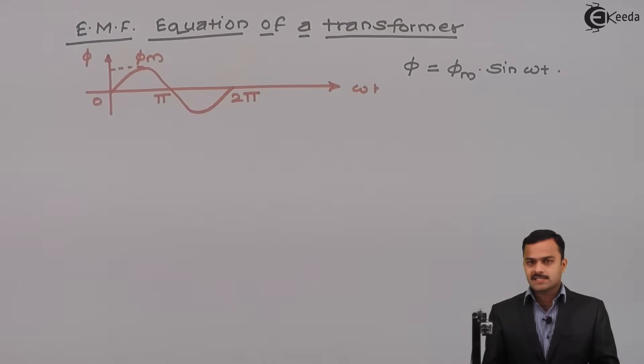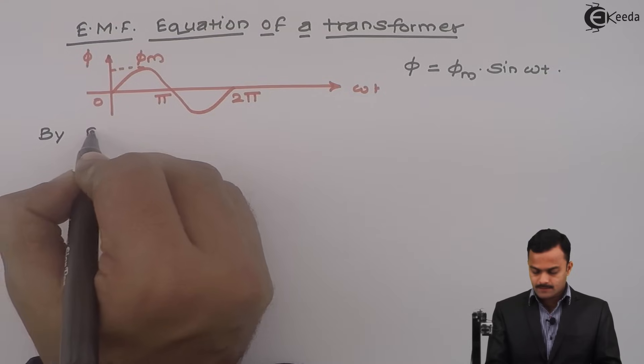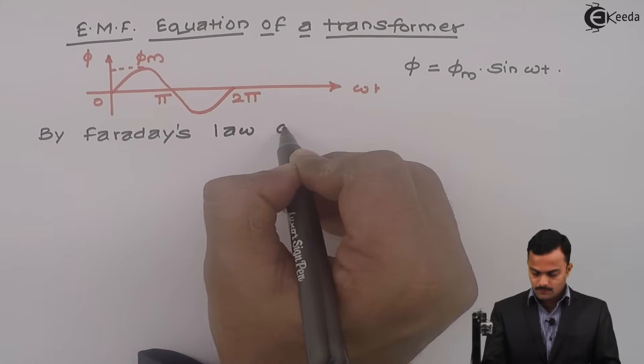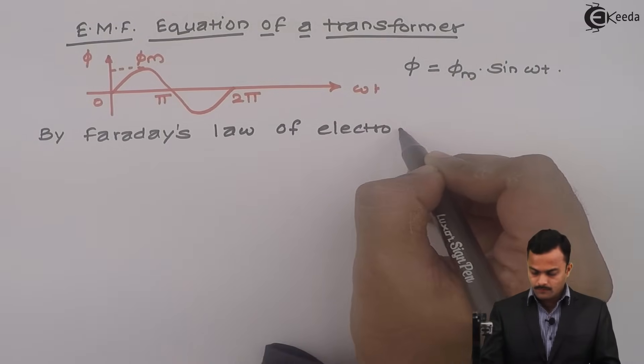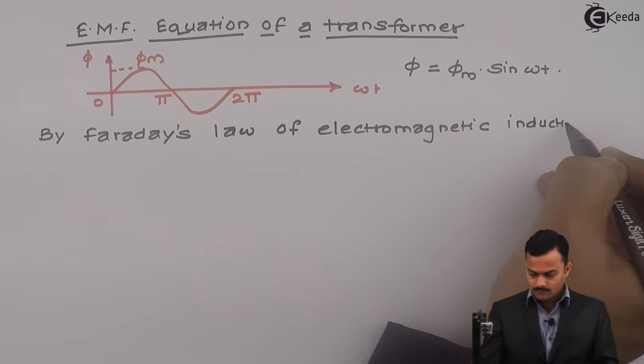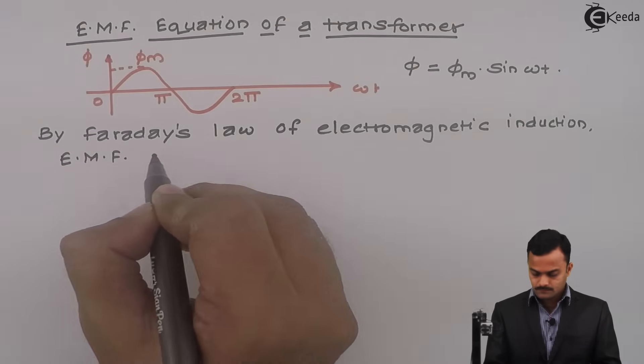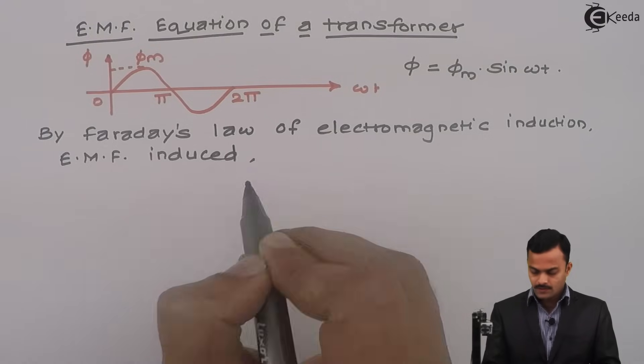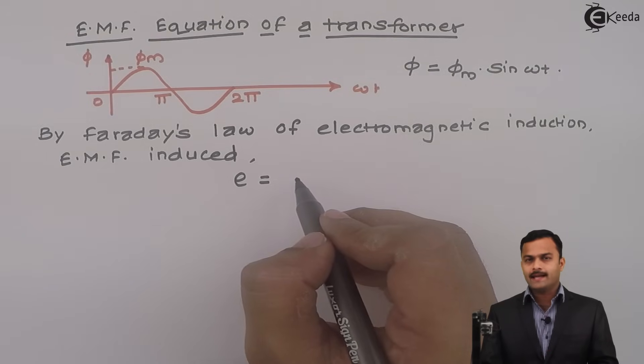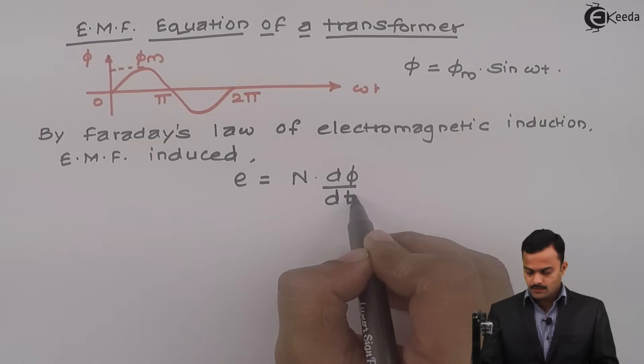Now this flux waveform is changing with respect to time. Hence, by Faraday's law of electromagnetic induction, EMF induced E equal to, if I'm considering windings have n number of turns, n d phi by dt.